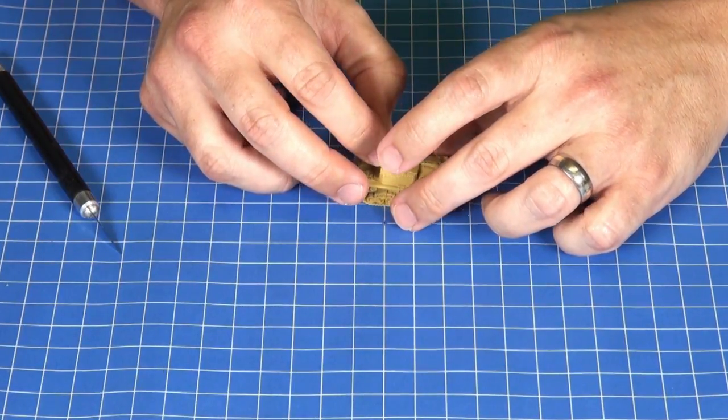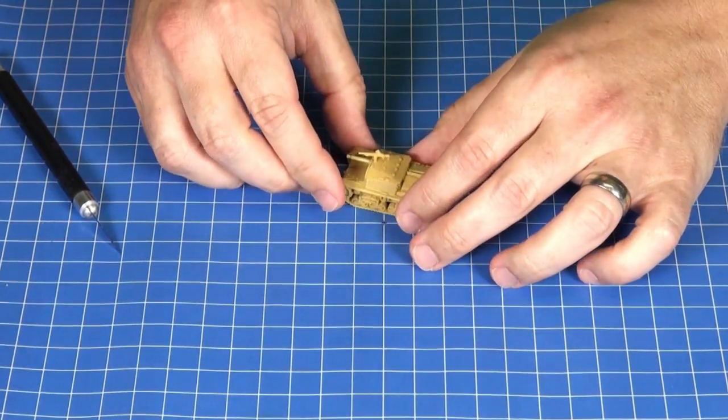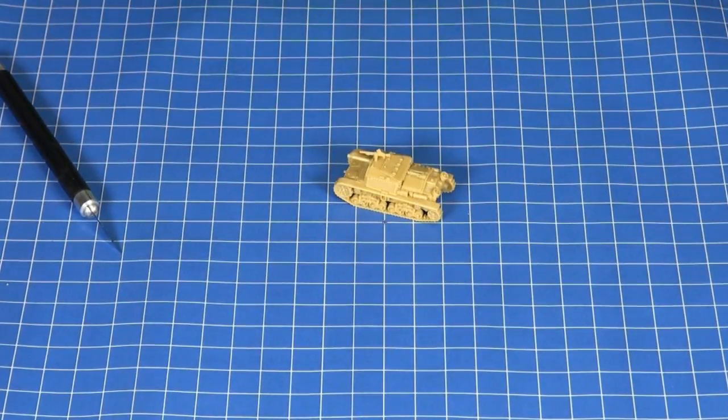Like the British Bren gun, this machine gun is fed from the top, so you've got the curved magazine up top, and then the little mounting bracket pointing down into the tank. There we have it, a finished Semivente assault gun.